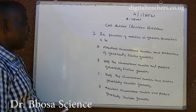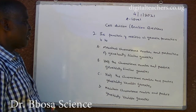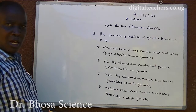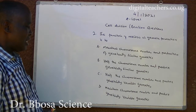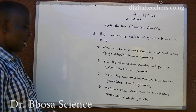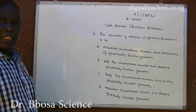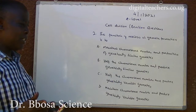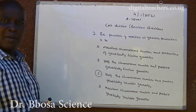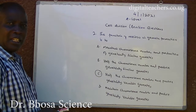Number 2. The function of meiosis in gamete formation is: A. Maintain chromosome number and production of genetically similar gametes. B. Half chromosome number and produce genetically similar gametes. C. Half chromosome number and produce genetically variable gametes. D. Maintain chromosome number and produce genetically variable gametes. You can pause and answer. The answer is C. The gametes are haploid cells and genetically variable.